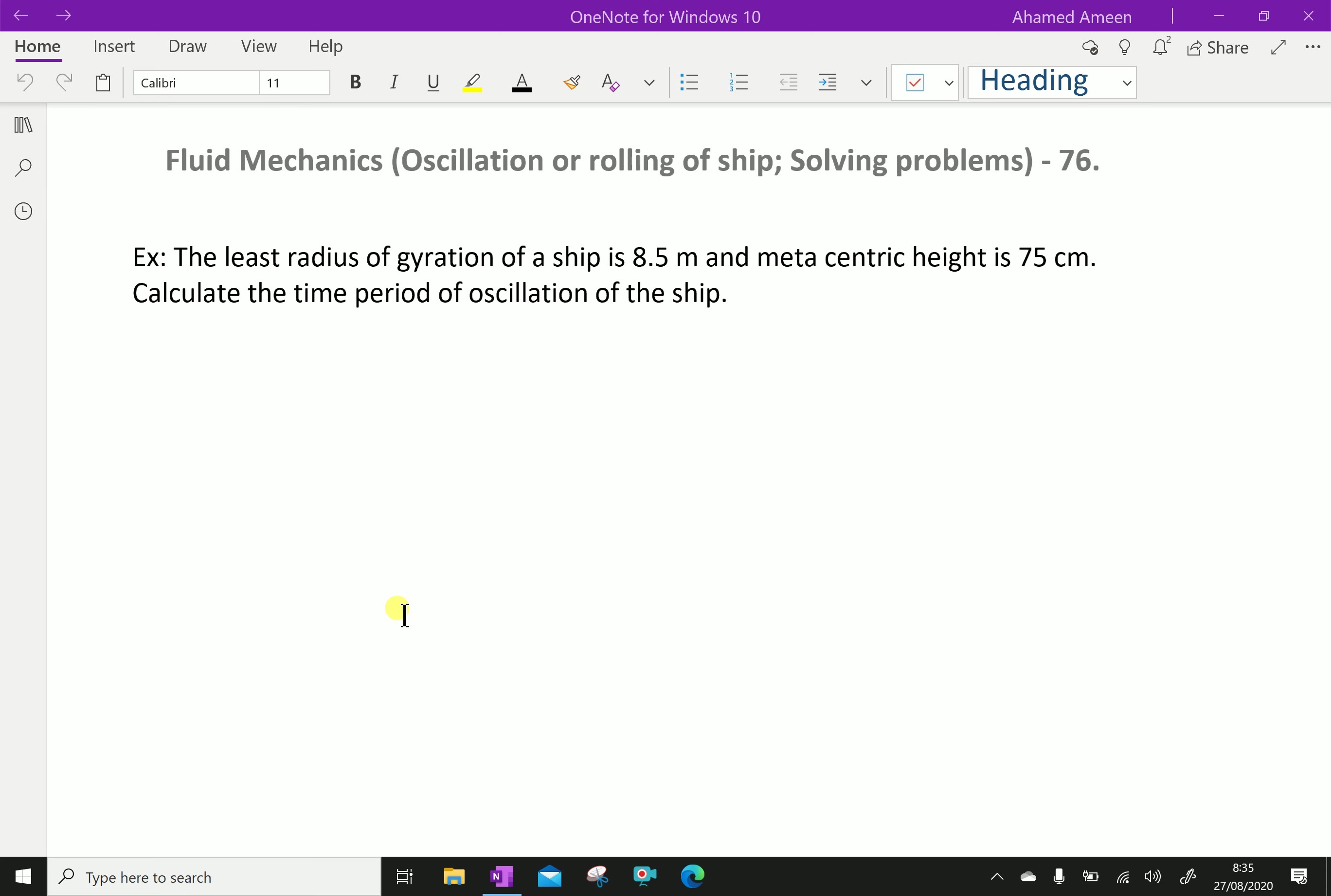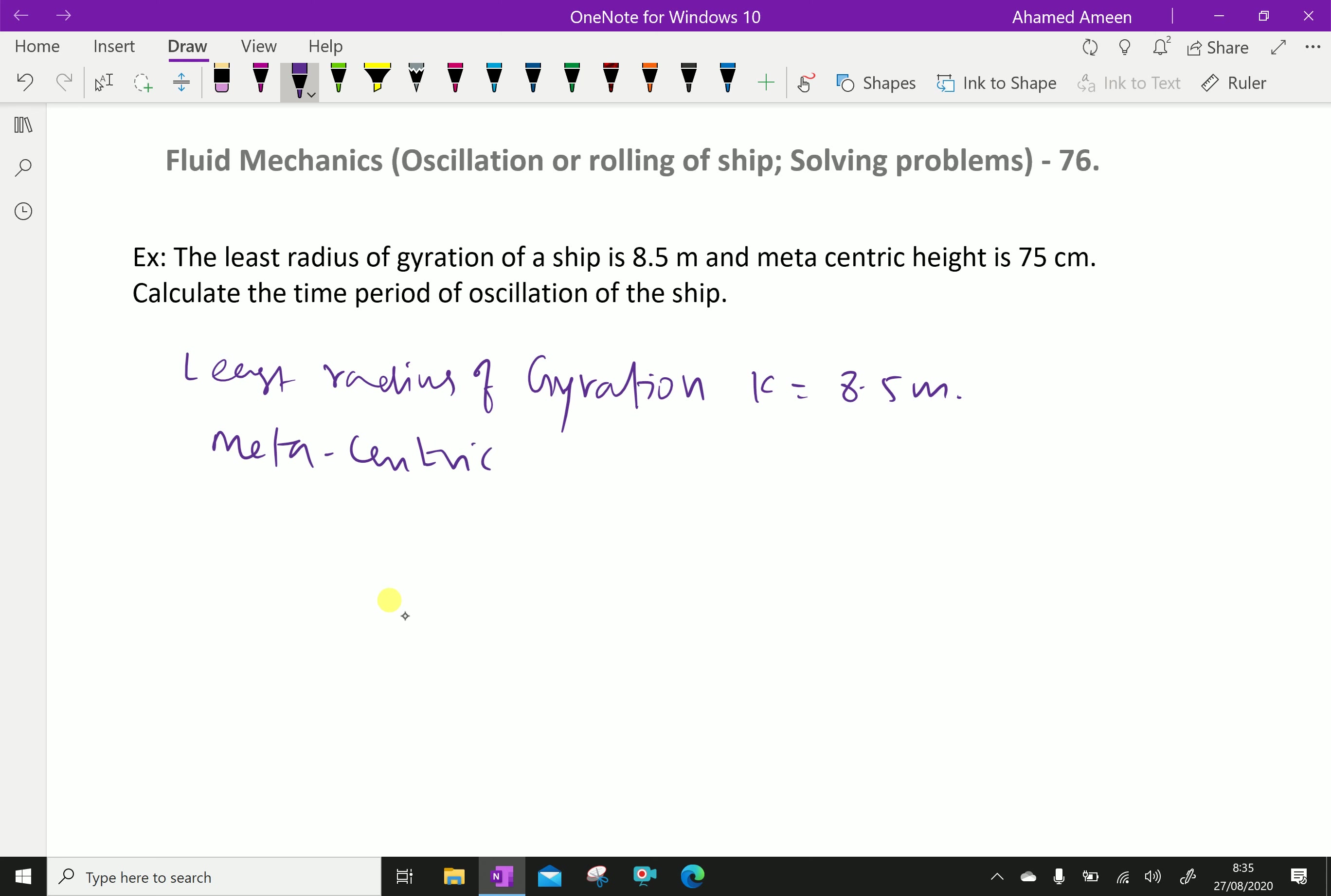Here, least radius of gyration k equals 8.5 meter. The metacentric height gm equals 75 centimeter which is 0.75 meter.